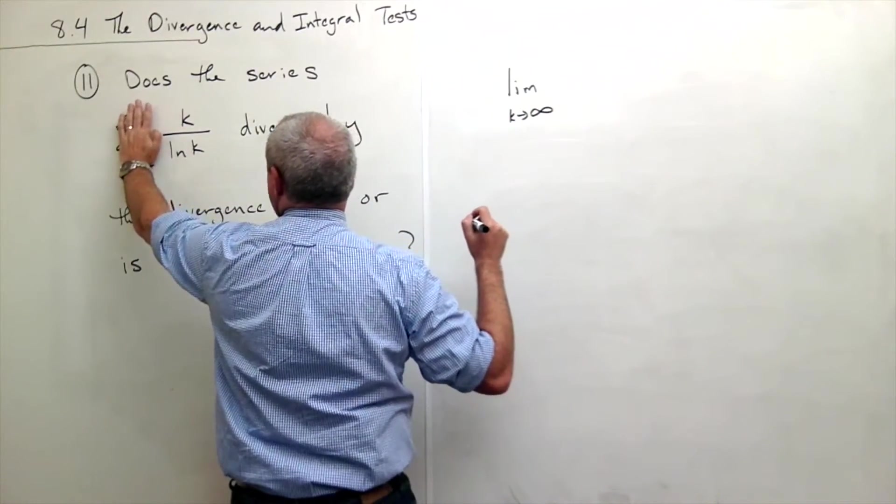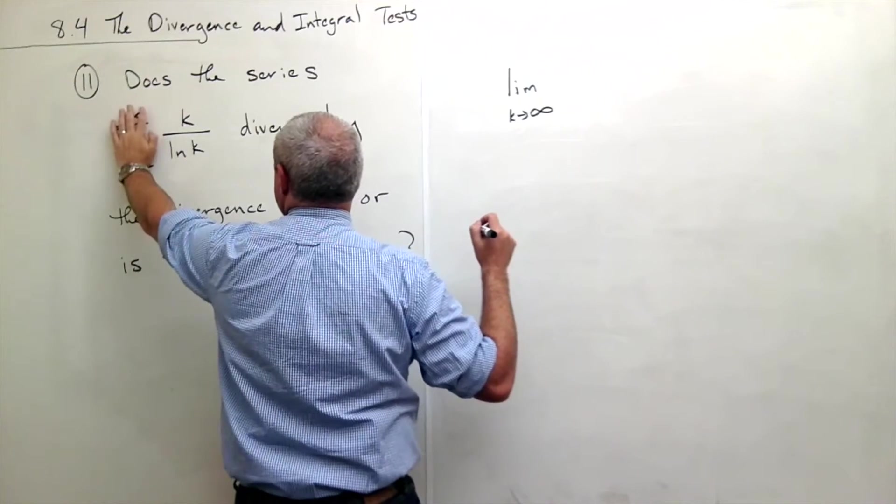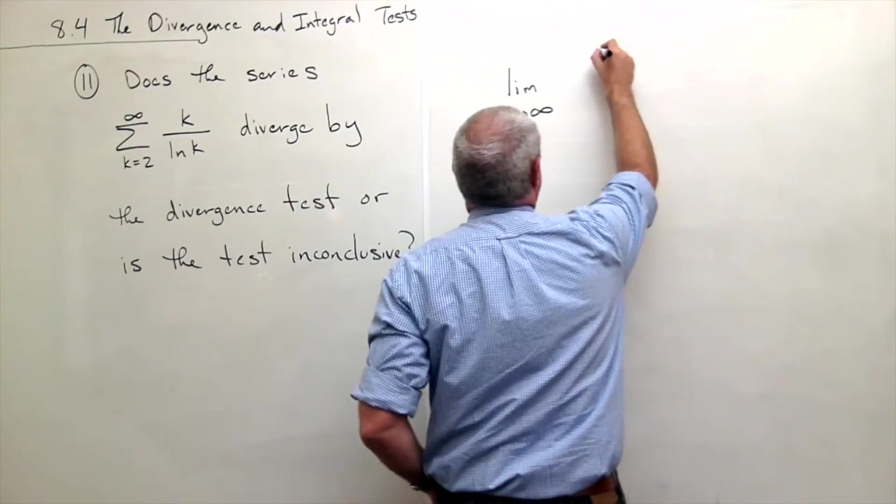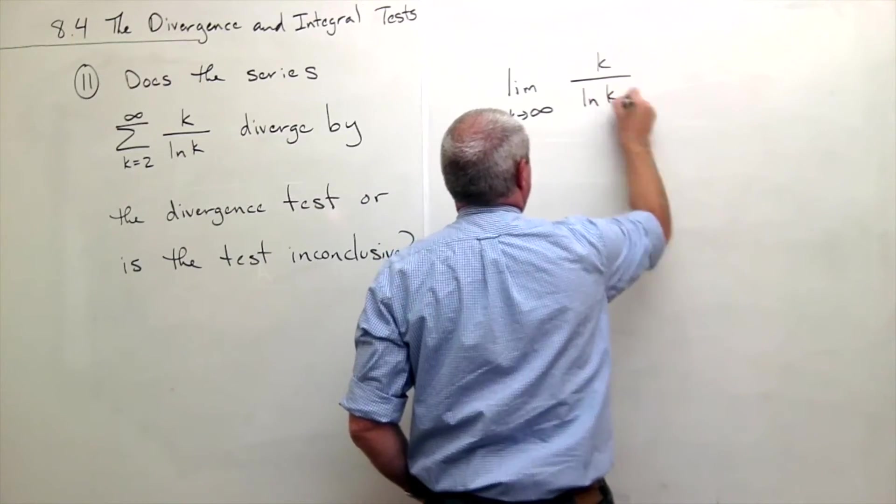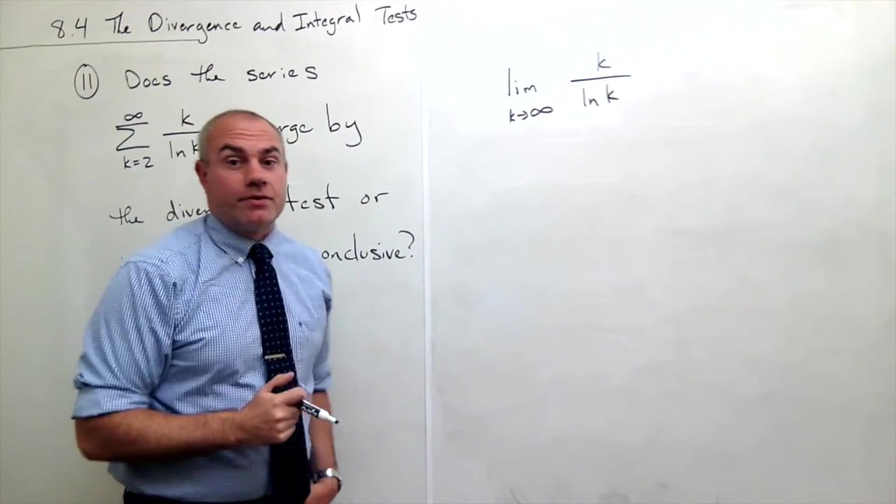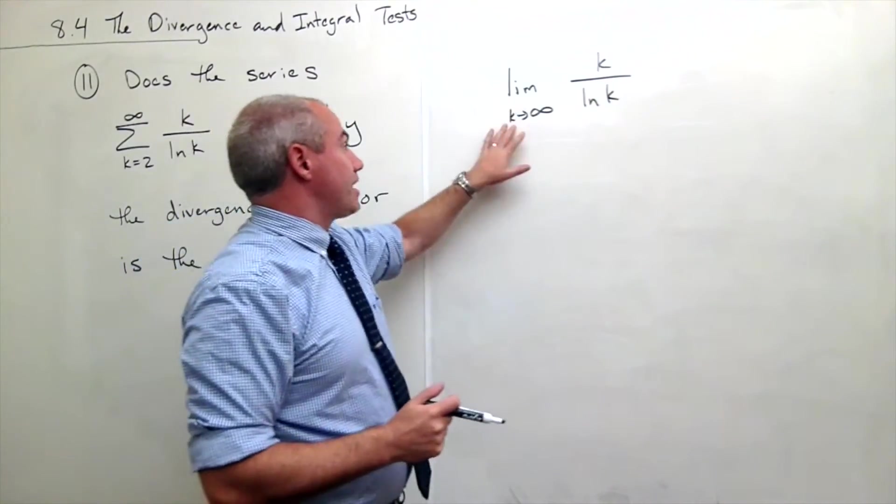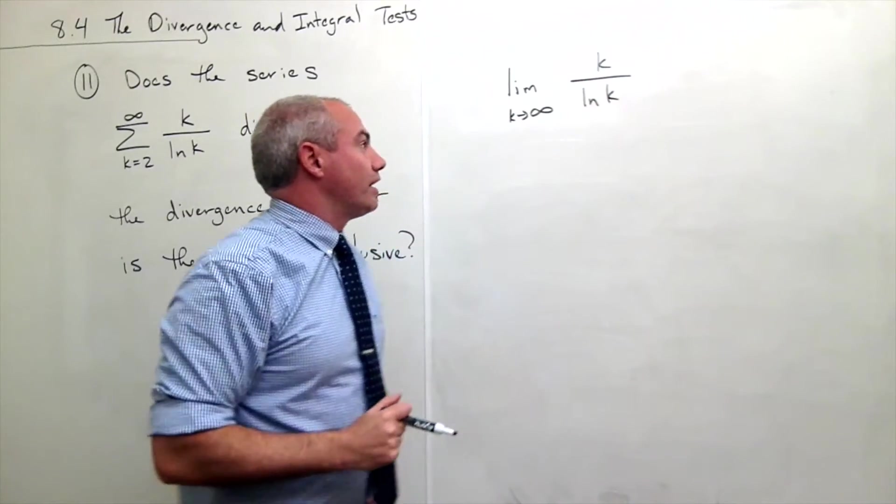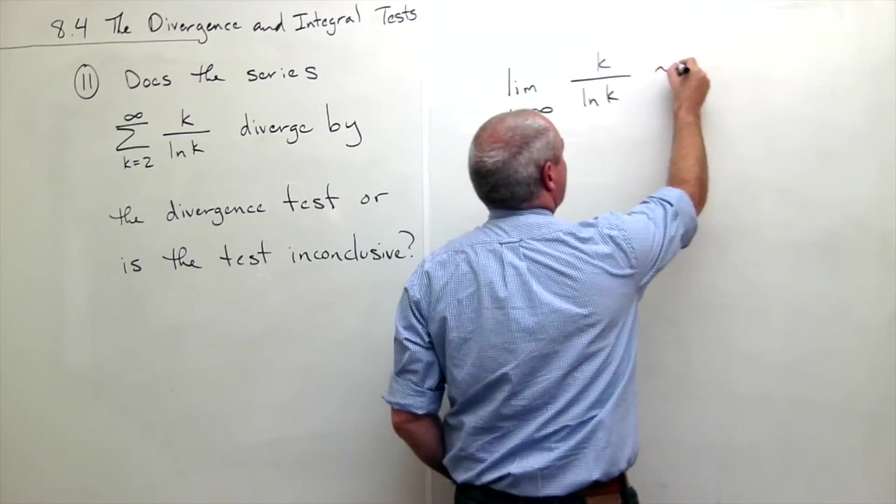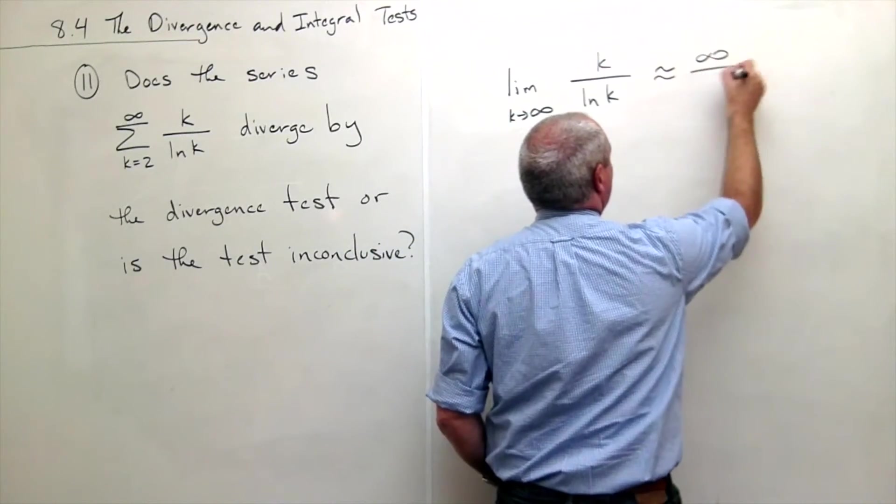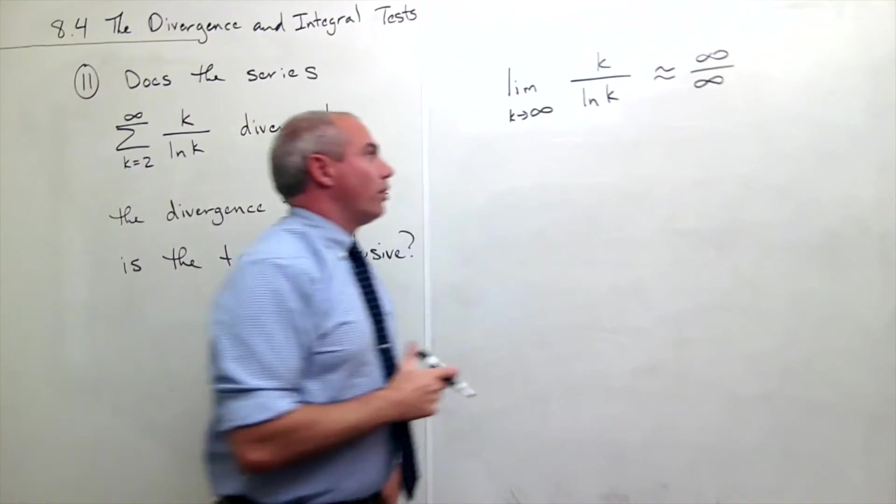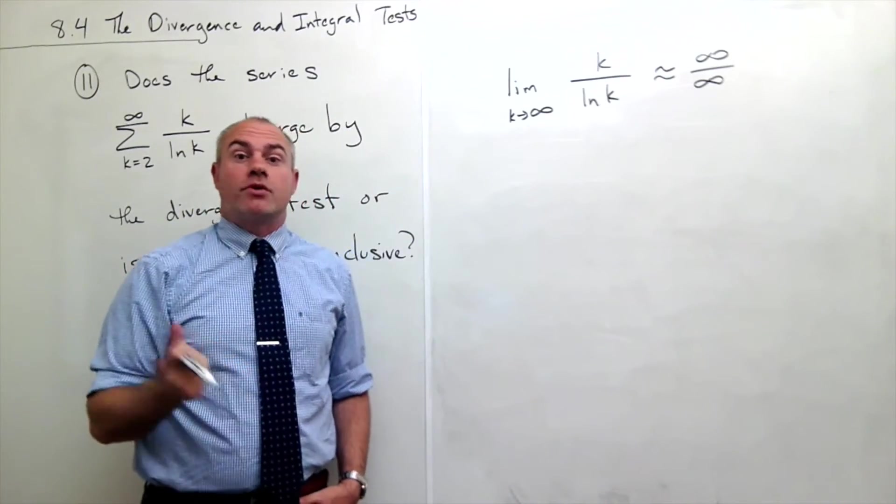k over ln k. So I write the sequence in there: I want the limit as k goes to infinity of k over ln k. Now this has the form: if I plug in infinity, this is infinity over infinity, so that's an indeterminate form.